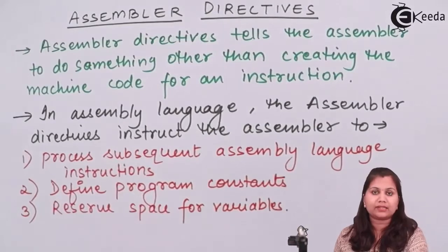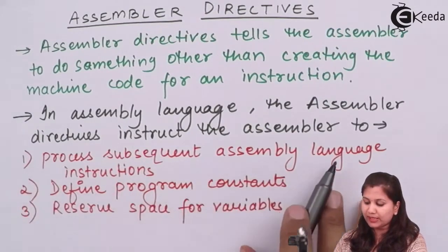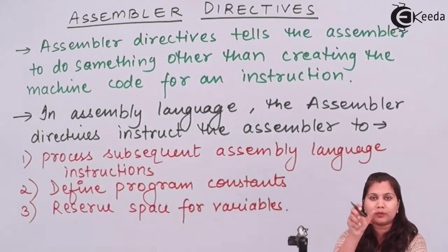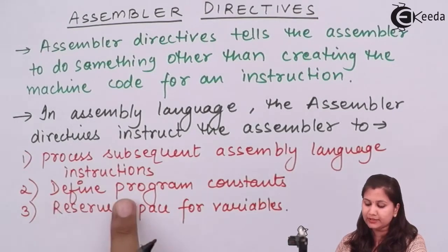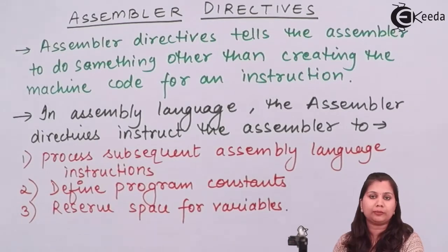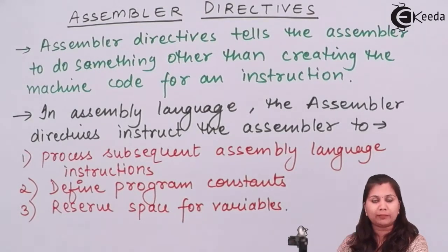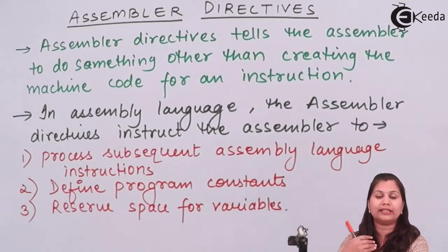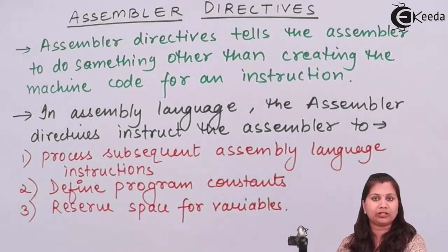Assembler directives in assembly language programming perform operations like instructing the assembler to process the subsequent assembly language instructions. They are also used for defining program constants and reserving space for variables. These assembler directives do not perform normal operations like arithmetic, logical, or data transfer — they only instruct the assembler to perform these specific operations.